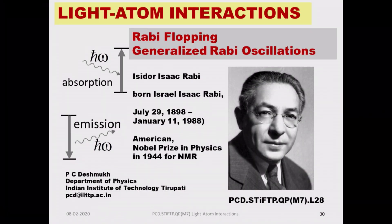Greetings. We introduced the Rabi frequency in the previous class. In this class, we will also introduce what is called the generalized Rabi frequency. Rabi got a Nobel Prize in 1944 and made one of the most important contributions to the general field of light-matter interactions.